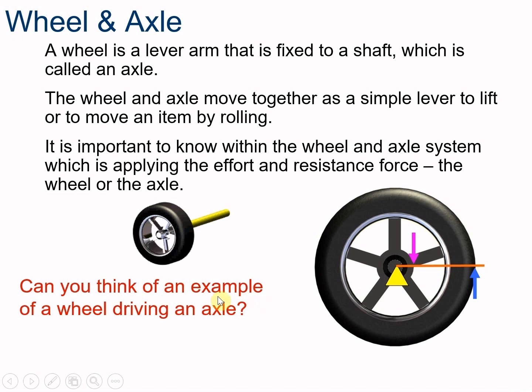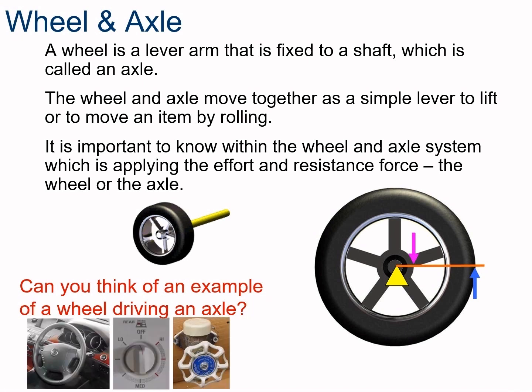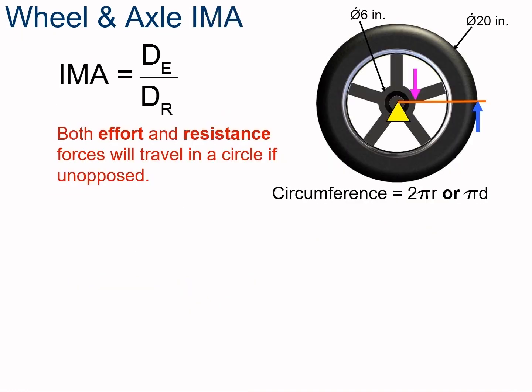There are lots of examples of a wheel driving an axle — steering wheels, knobs, valves. So let's start with the IMA, the ideal mechanical advantage. The ideal mechanical advantage is the distance of the effort divided by the distance of the resistance. Both of these forces are going to travel in a circular pattern when we're talking about wheels and axles.